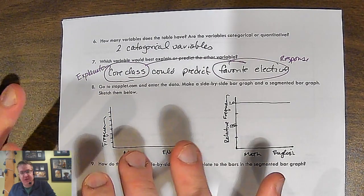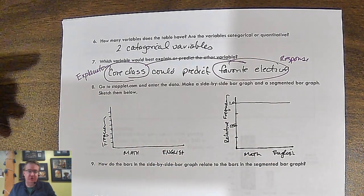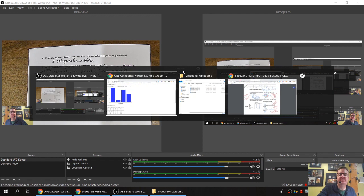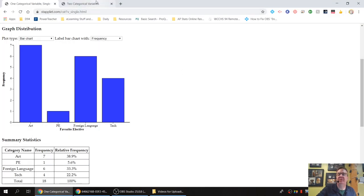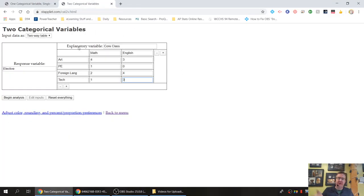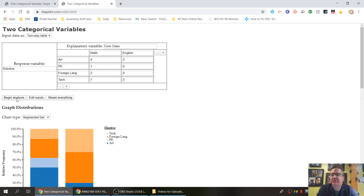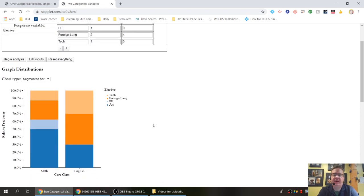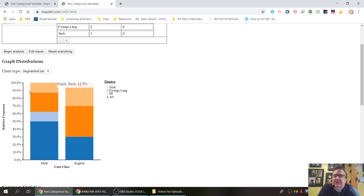Now that we've got these two categorical ones, we're going to go back to staplet. We're going to choose two categorical variables. When we do that, you type in the table. Hey, that looks familiar. I know it's a shock. And then you're going to choose, we're going to say begin analysis. And this is called a segmented bar graph. Ta-da. Now notice what this does is that it's still going 100% here. So we're still dealing with relative frequency, but everything is stacked up.